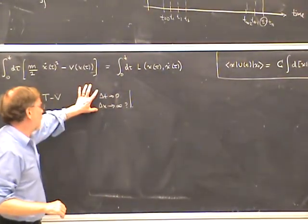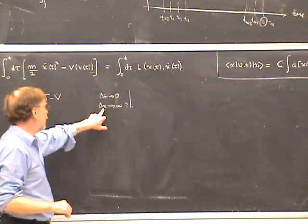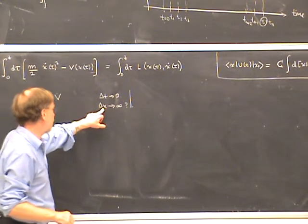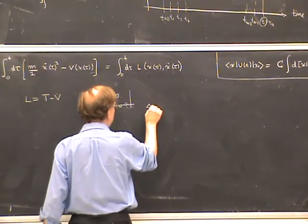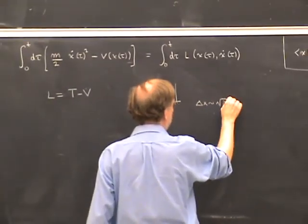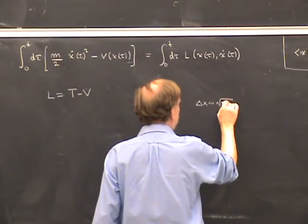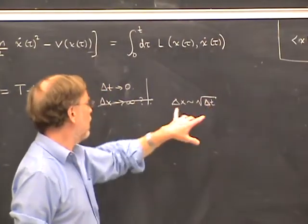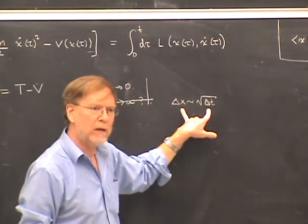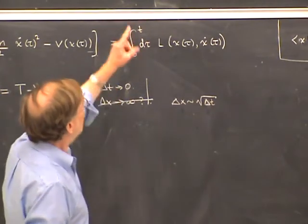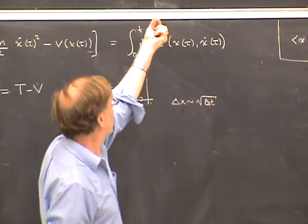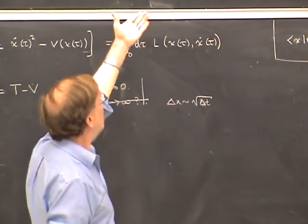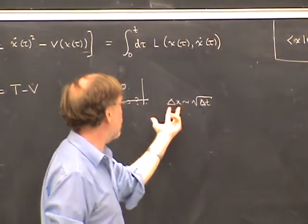This seems to suggest the paths are not continuous, since a continuous path would require δx to go to zero as δt goes to zero. However, it turns out that this is not quite the correct conclusion. It is true that δx ranges to infinity in the integral, but the major contributions to the integral occur only over a limited range of δx. In fact, δx is of order square root of δt — not because the range of integration is limited, but because those are the dominant contributions to the integral.